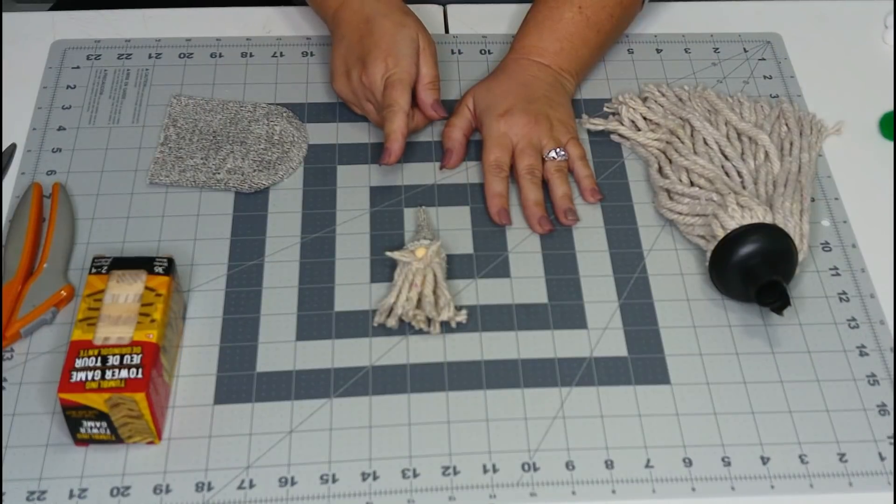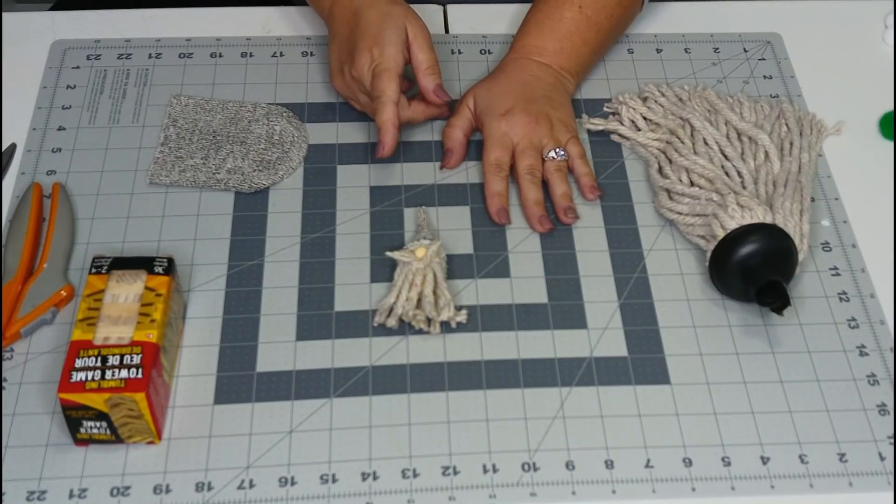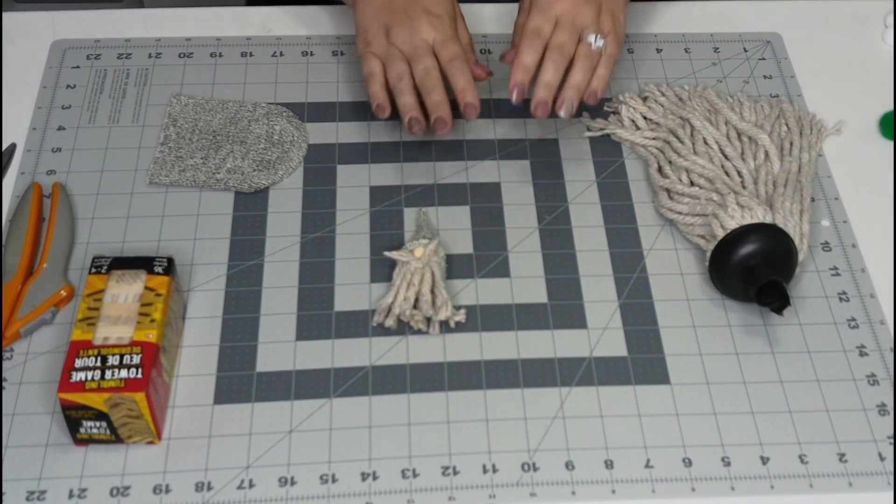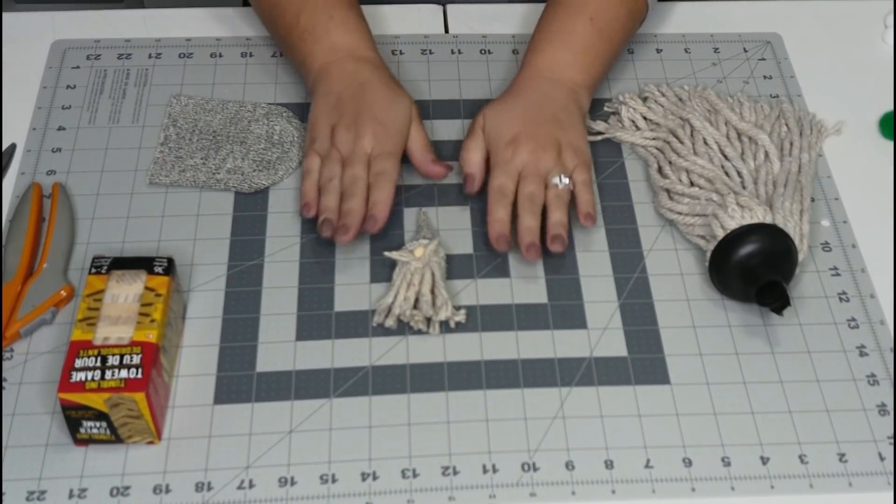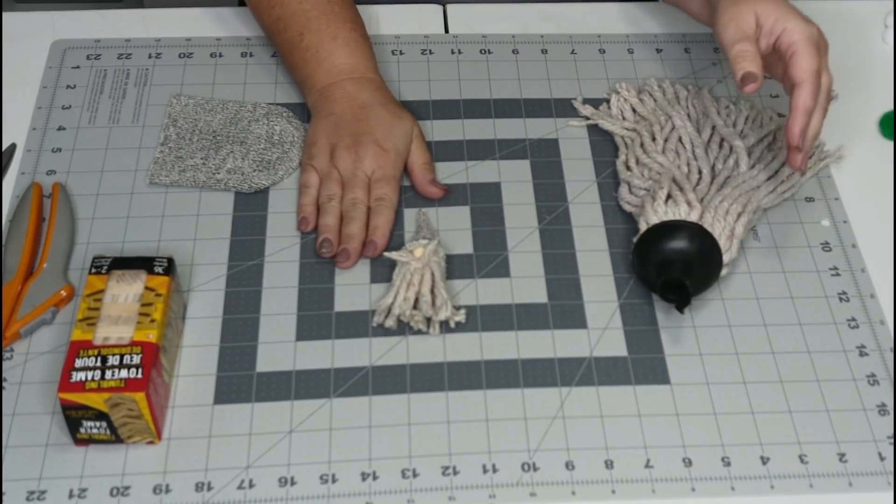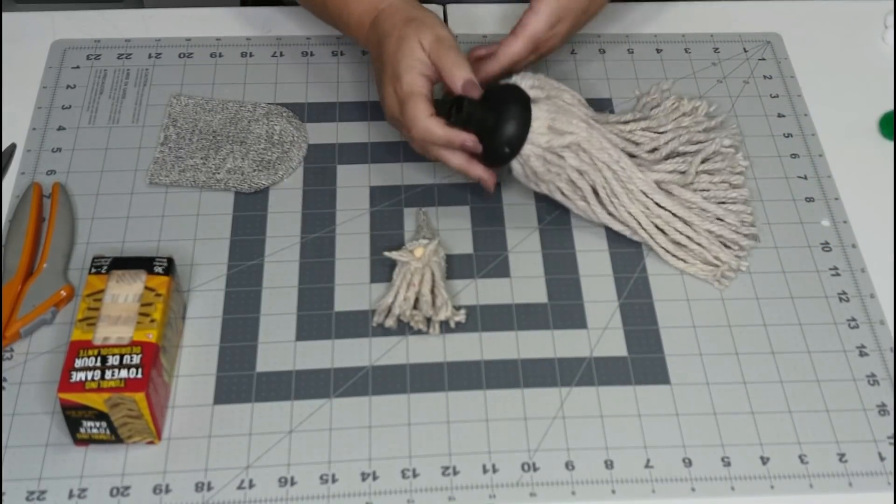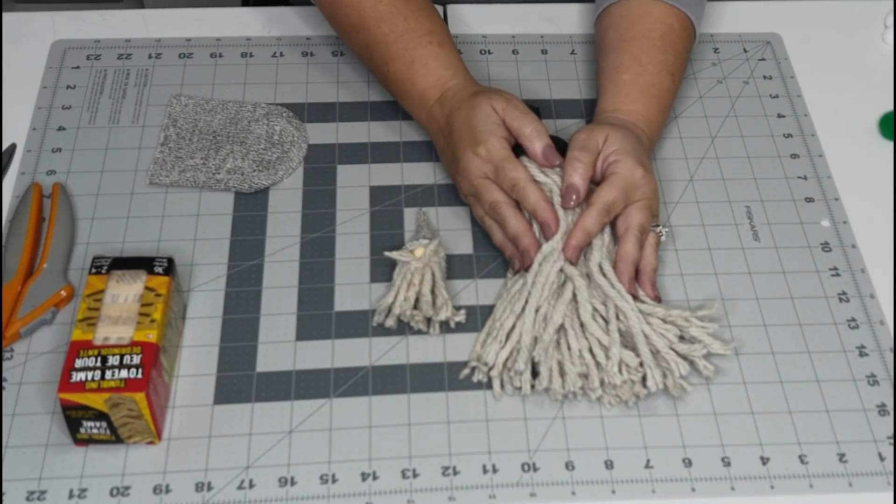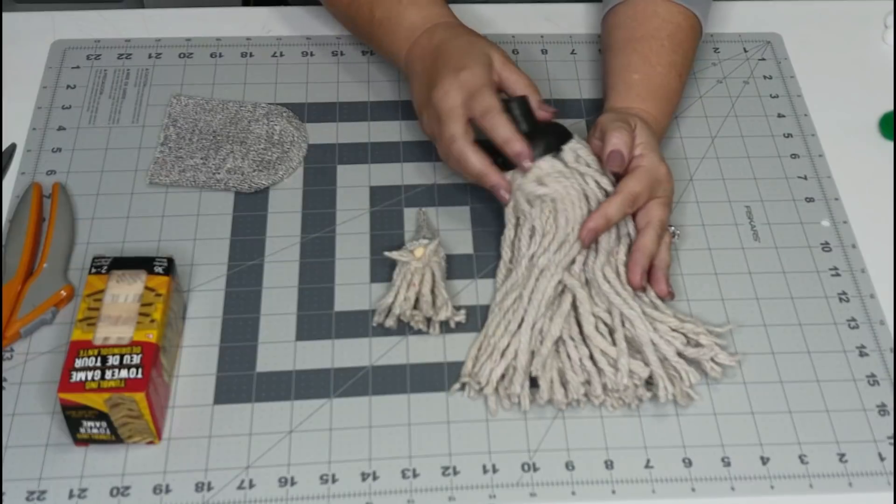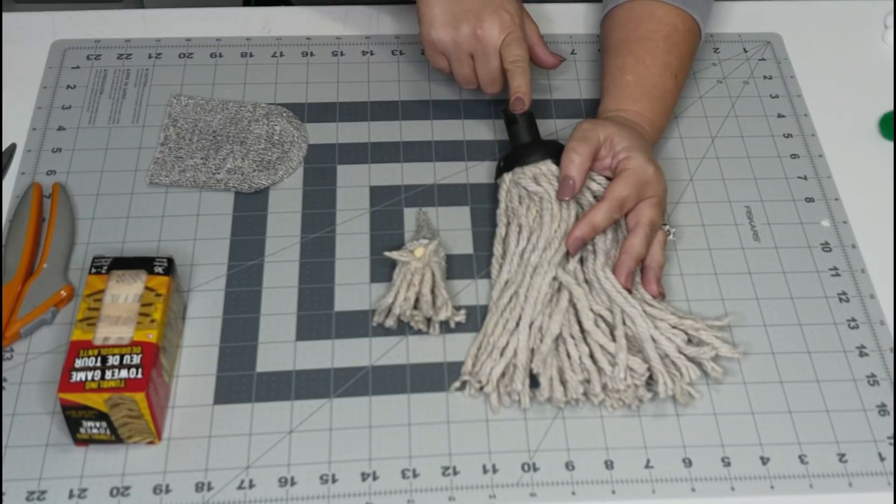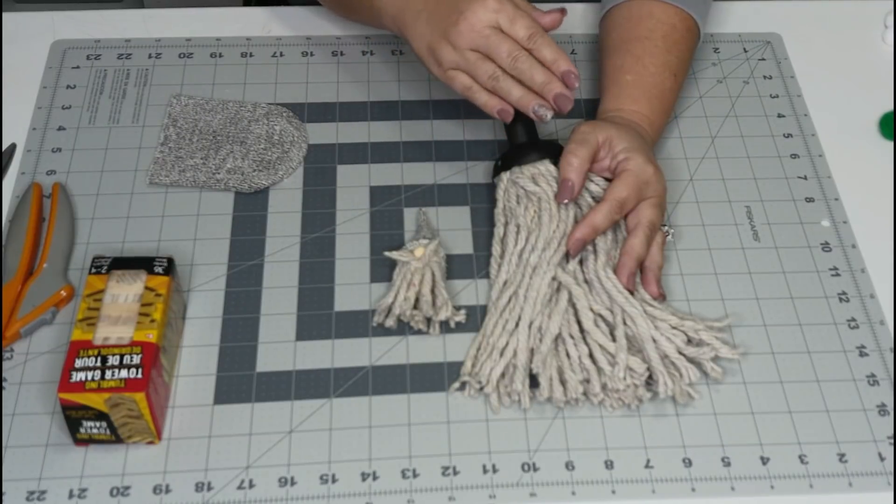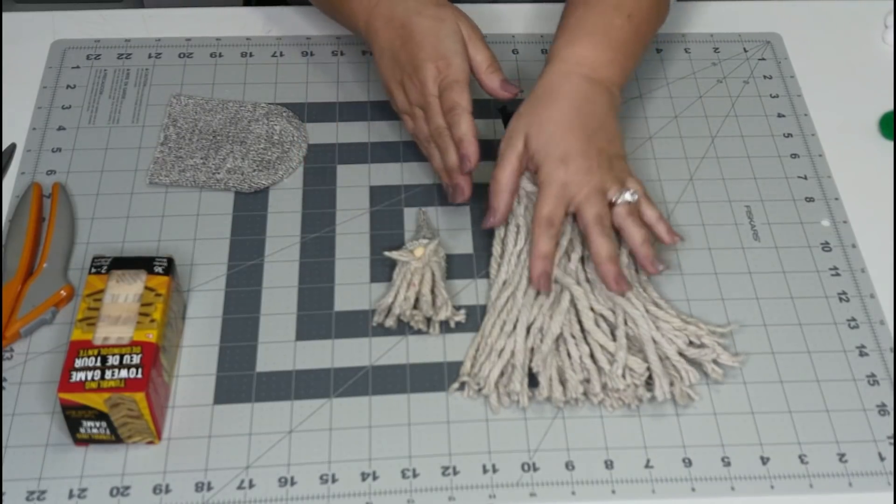Honestly most of these are left over from the gnome project that we just did, so if you missed number one video in this series definitely go back and check that out. One of the first things that we're going to be using is this mop, the same mop from the first video. This is just a mop from the Dollar Tree, we took the handle off but save the handle because I've got another project coming.